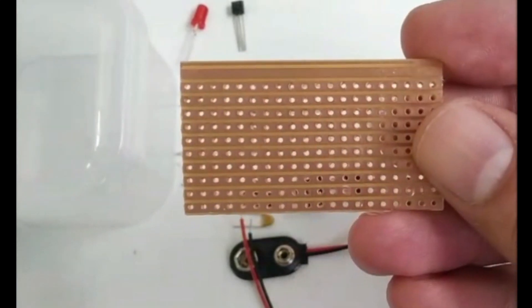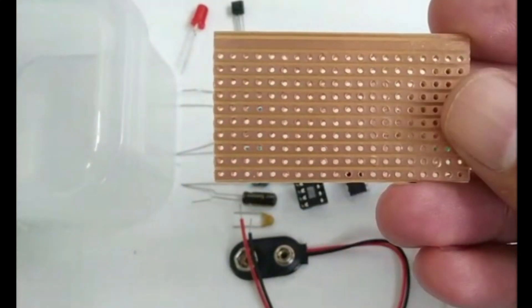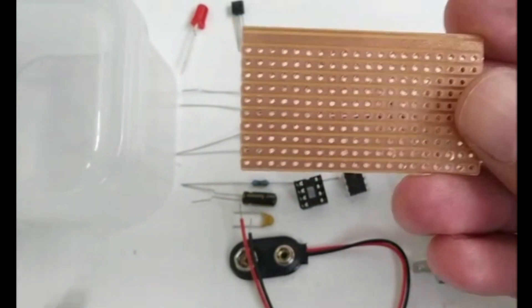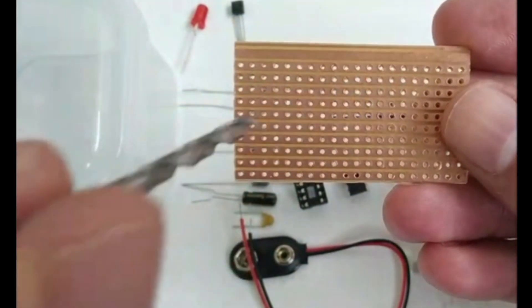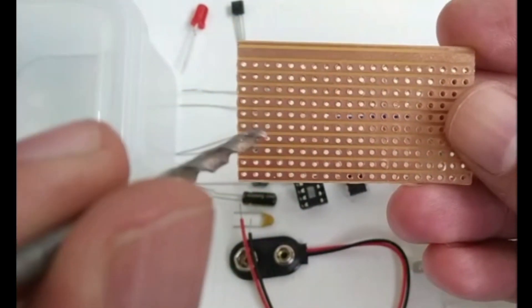As you can see the tracks run horizontally. And I can cut them by using a knife, but it's much easier to get the drill bit into the hole and spin it around a bit to cut the tracks.